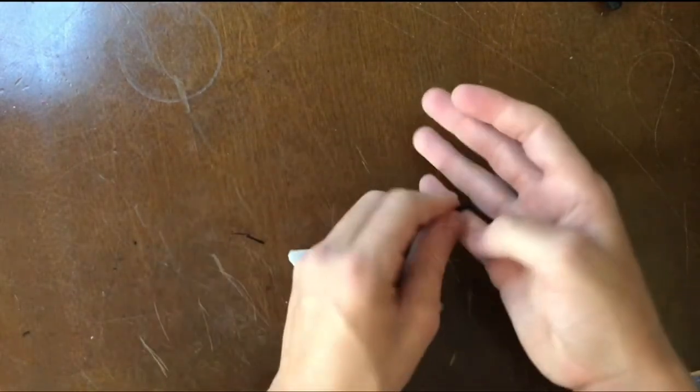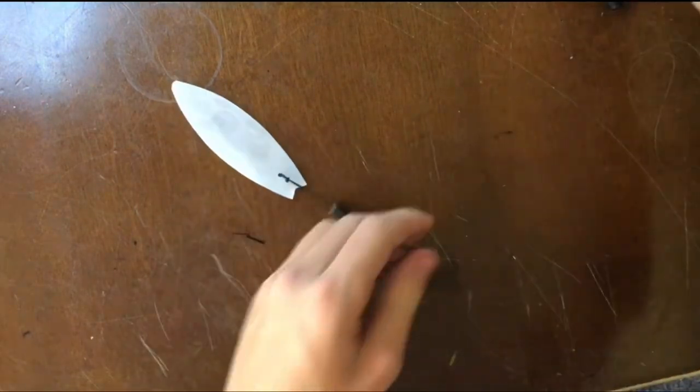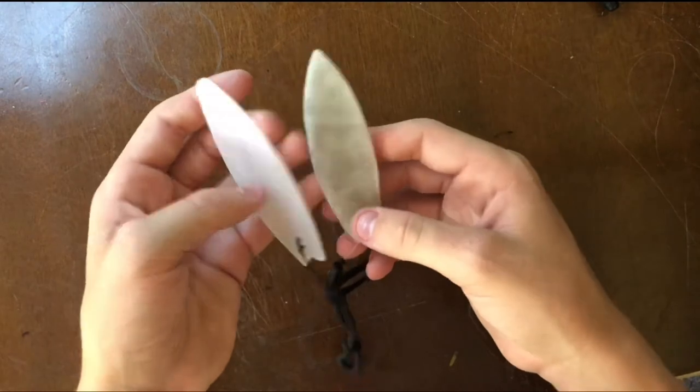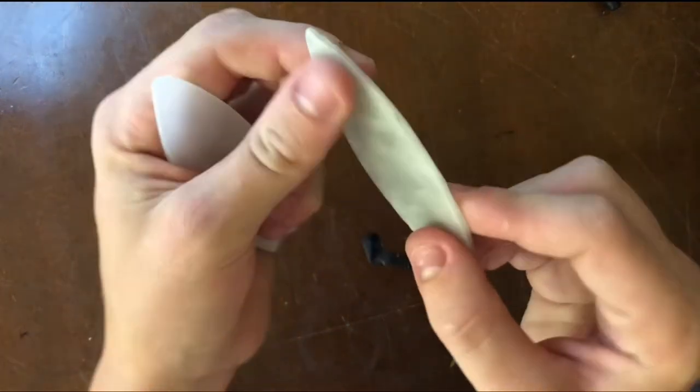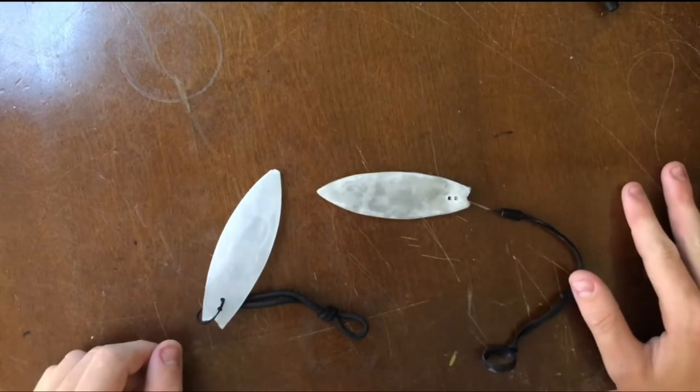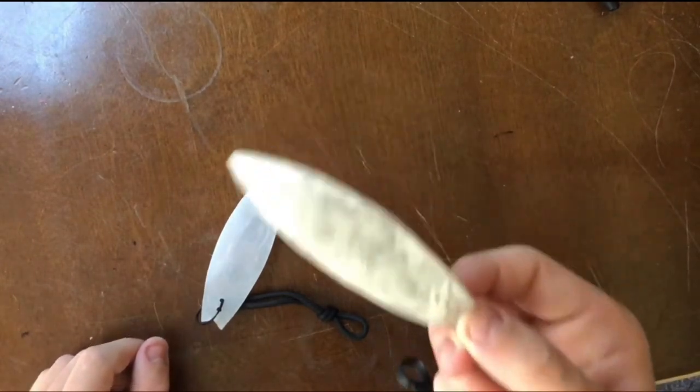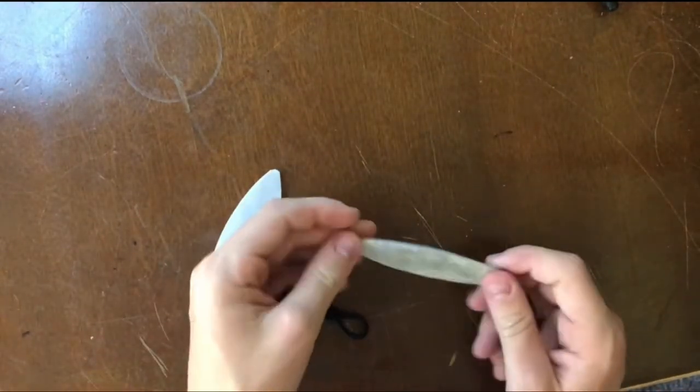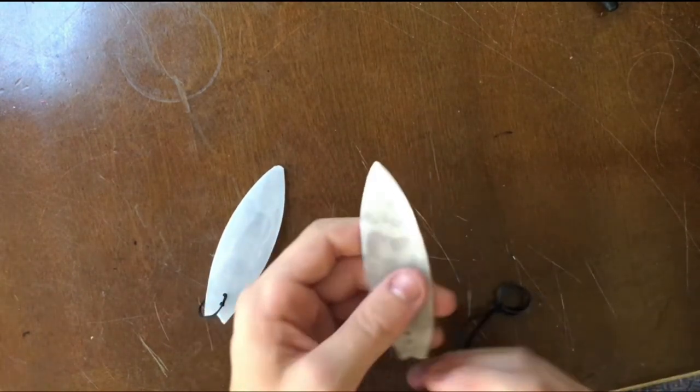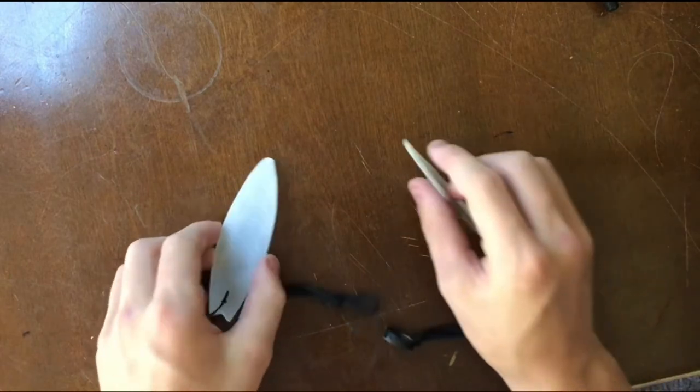And on my other one, you can see it's curved right there. And I did that by boiling some water and then putting it in there. And I waited for a couple minutes. And then I took it out. And I made it curved like that.